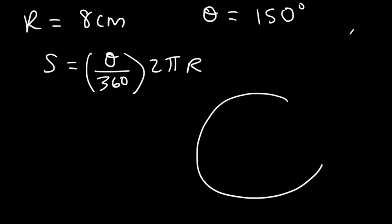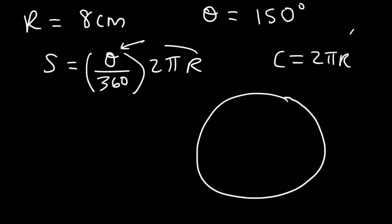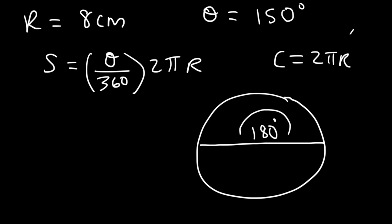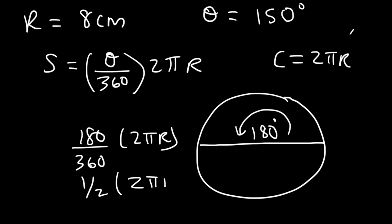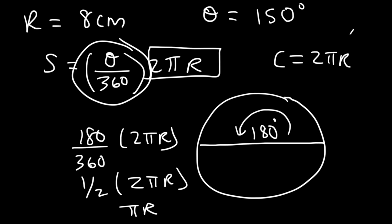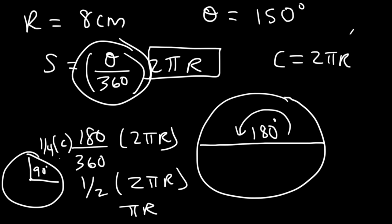Think about it this way: a full circle has an angle of 360°, so plugging in 360 gives 360/360 times 2πr, which is just 2πr. For a semicircle the angle is 180°, so it's 180/360 times 2πr — one-half of the circumference, which is πr. So the arc length is the circumference times a fraction of the circle: theta/360 is that fraction. For a 90° angle you get one-fourth of 2πr.